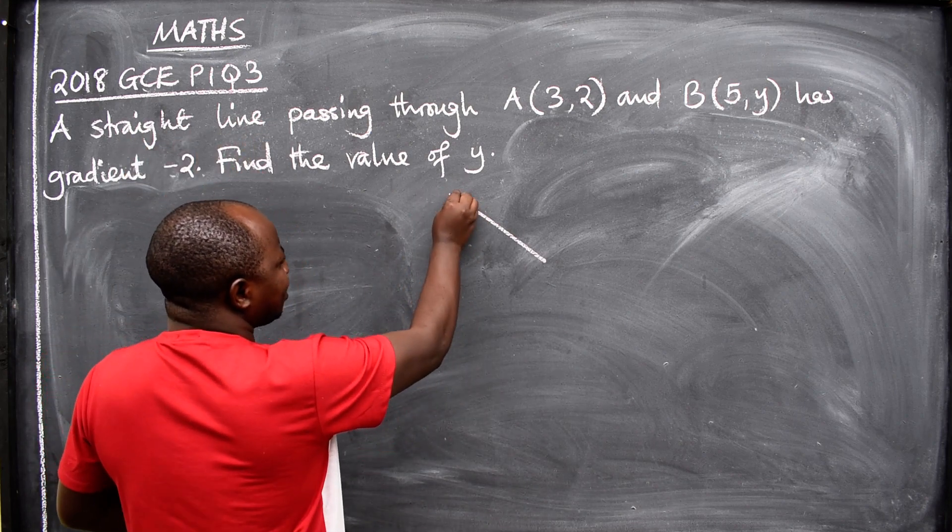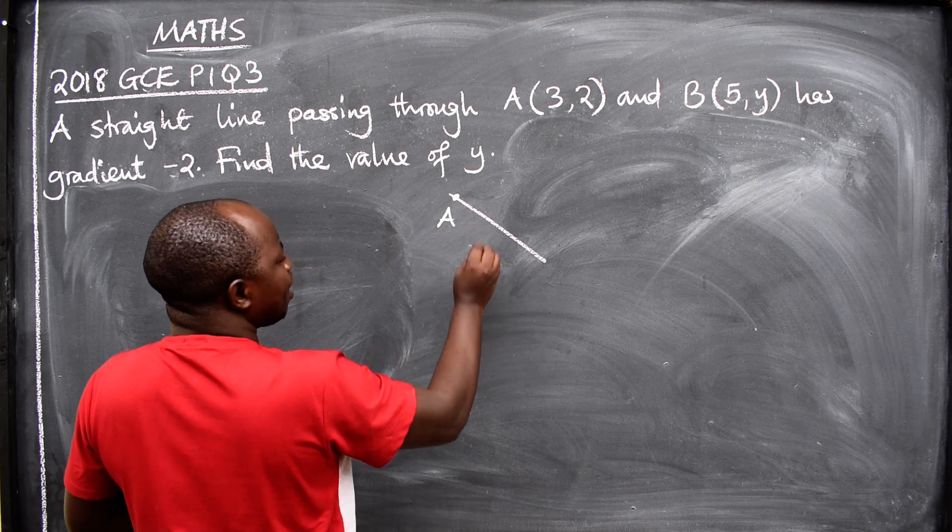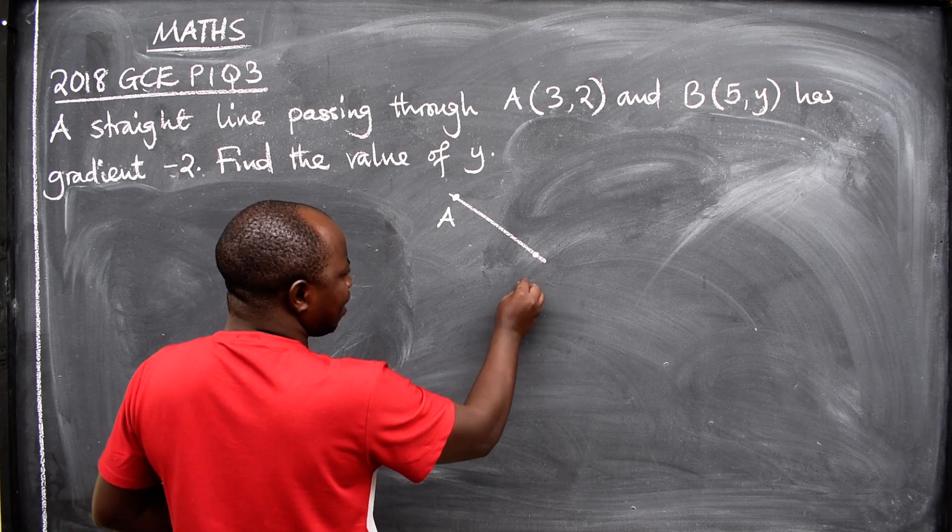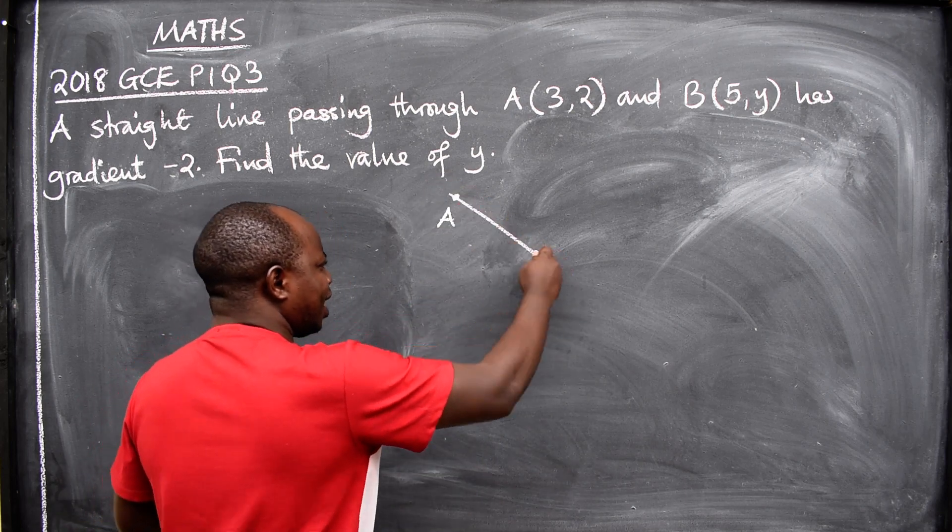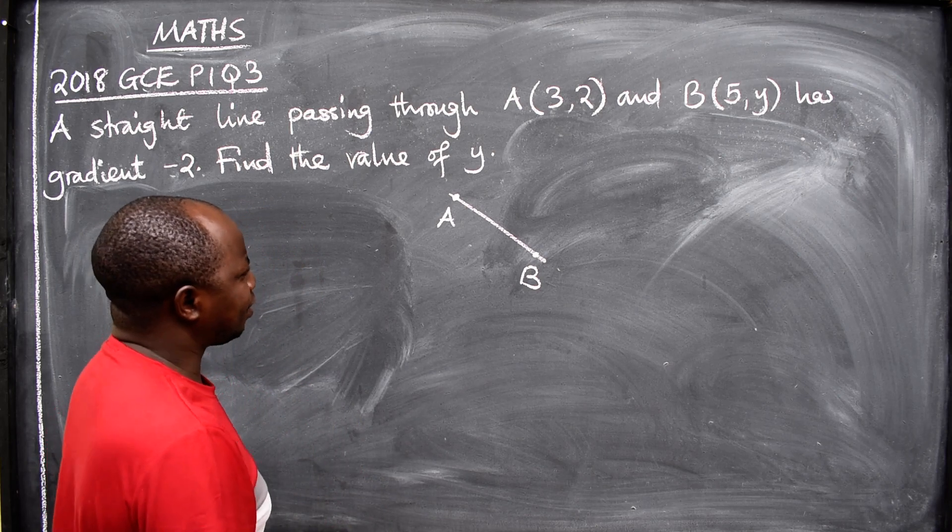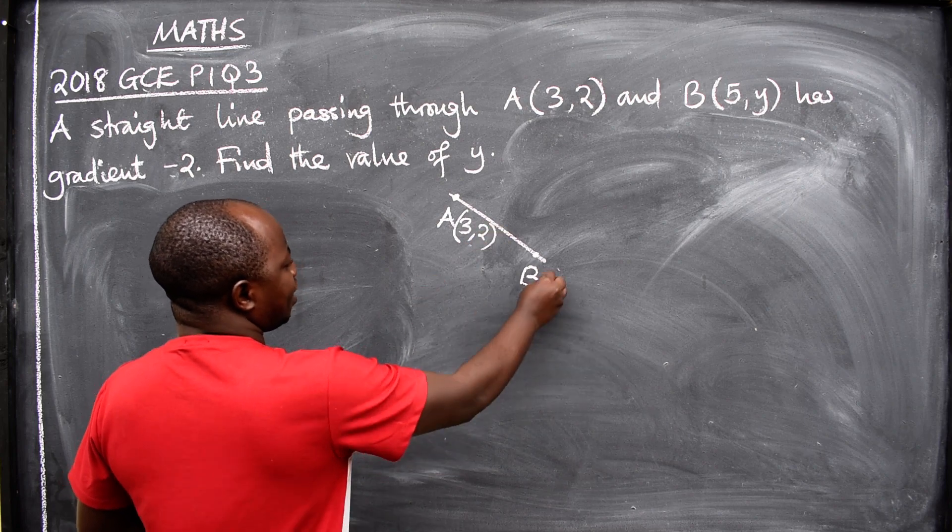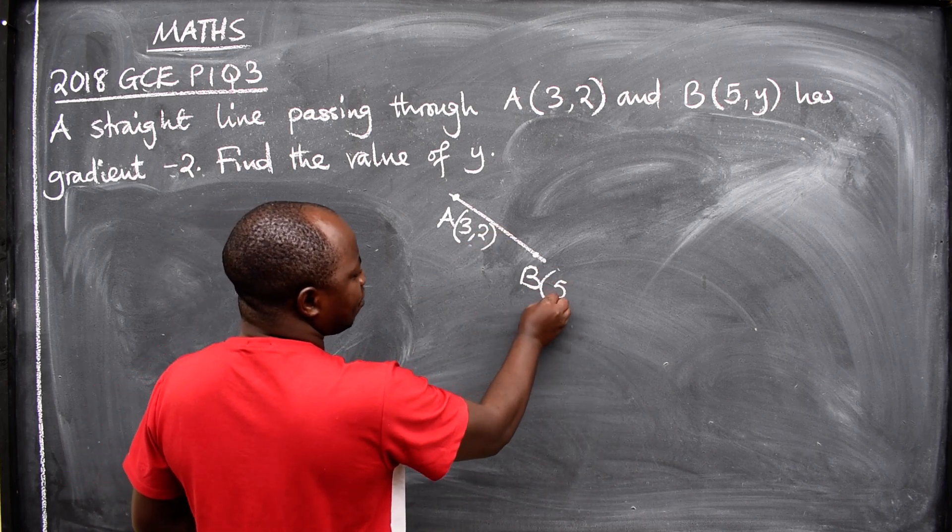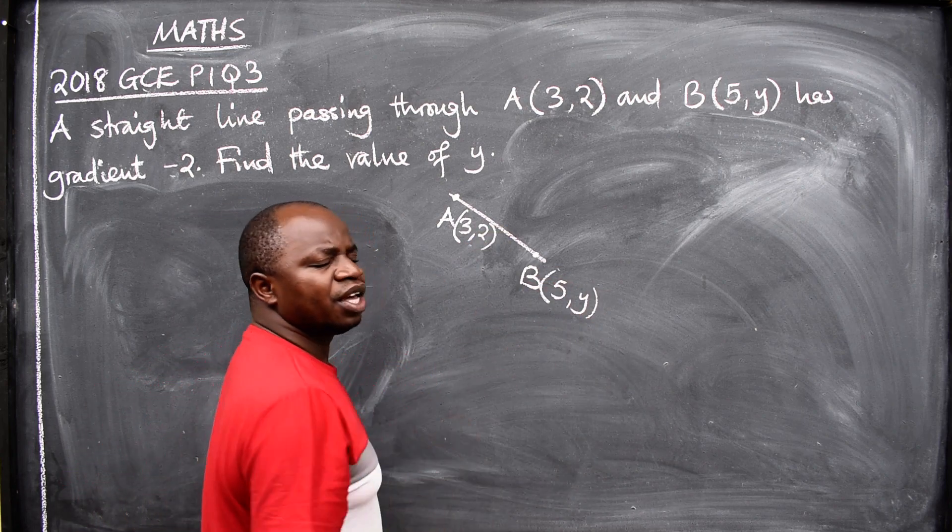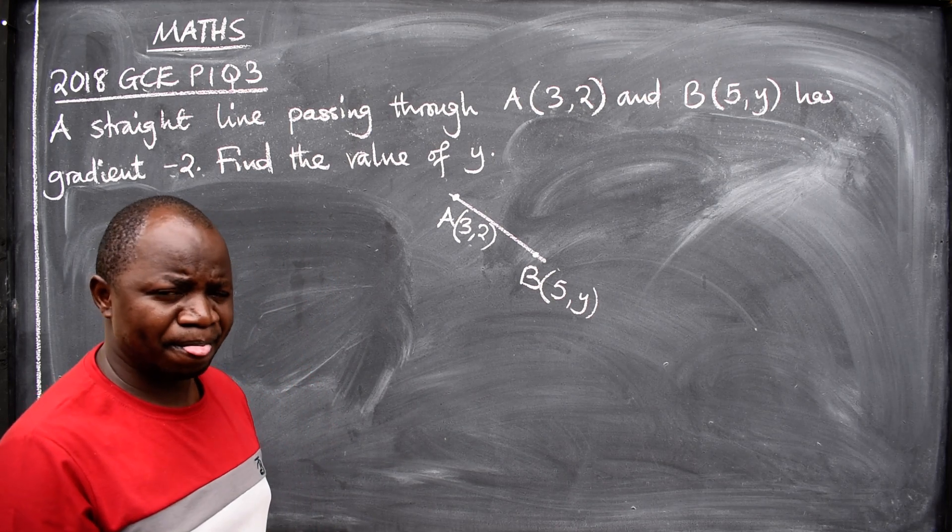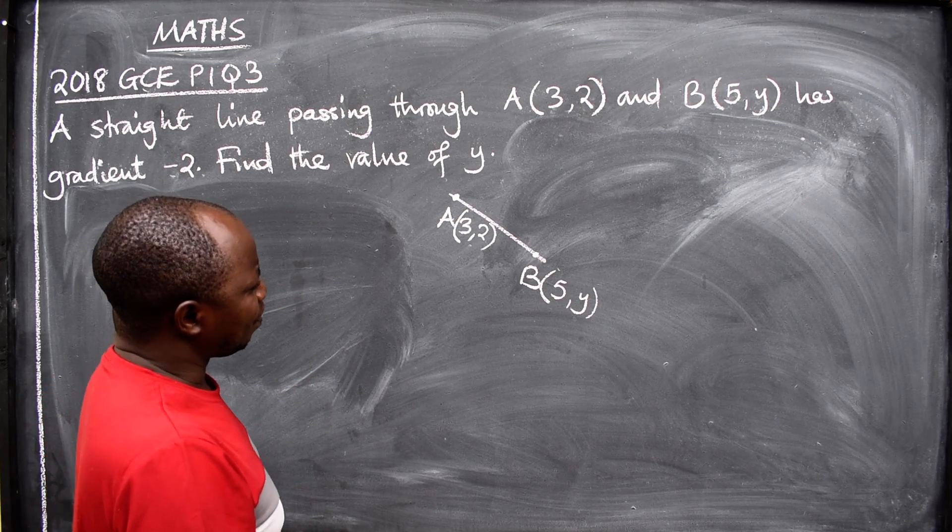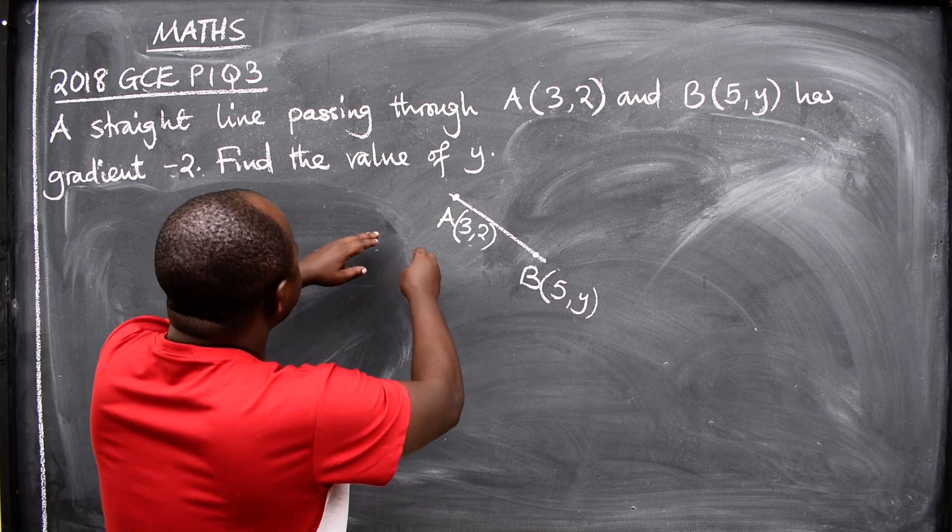Imagine, let's put it this way: this is the straight line, and we've got two points. Let's say this is point A, and we also have another point here, B. So this point is (3,2), and the other point here is (5,y). We don't know the value of y.